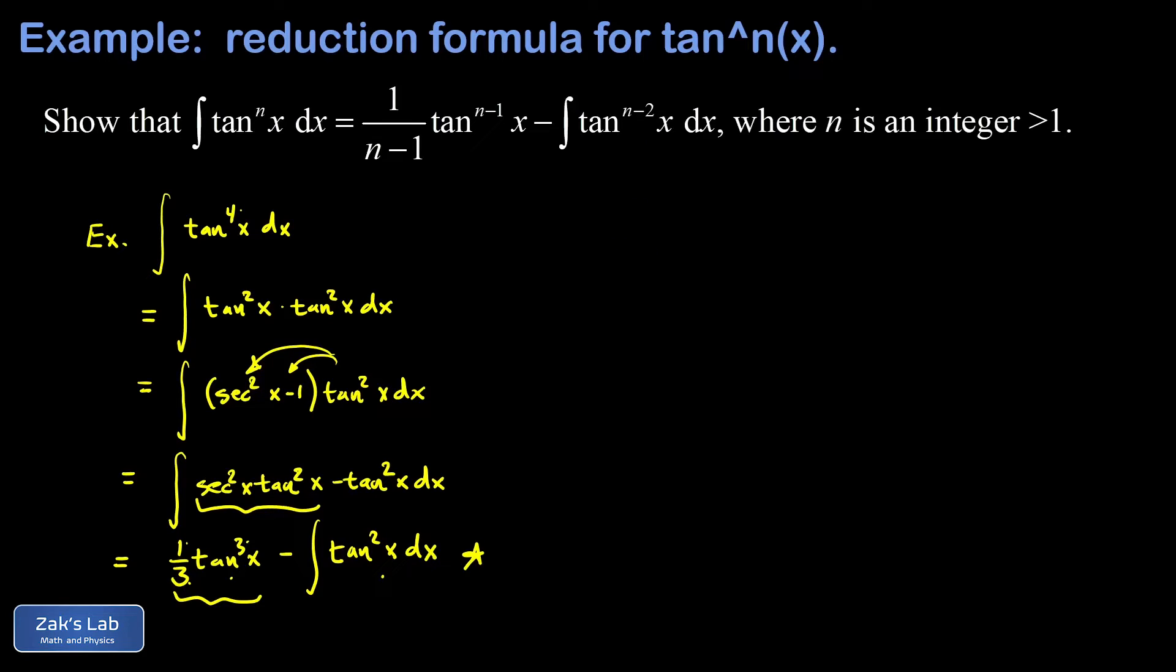So the power reduction formula just comes from using the standard trick that we always use for powers of the tangent function. And my derivation goes like this. I have the integral of the nth power of the tangent function.